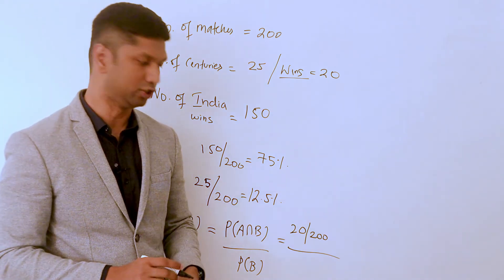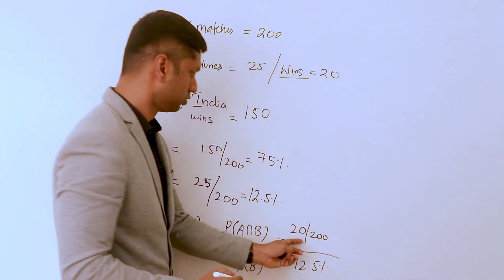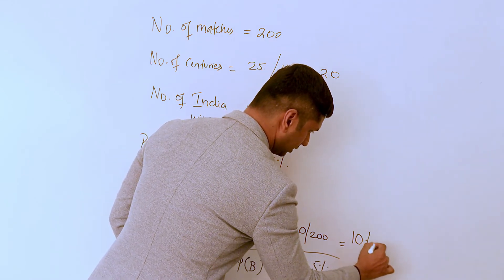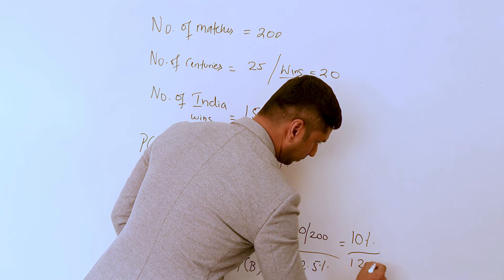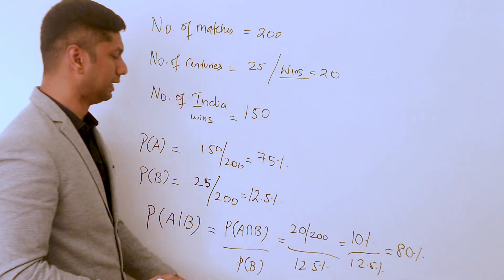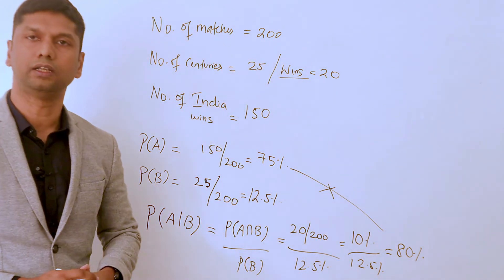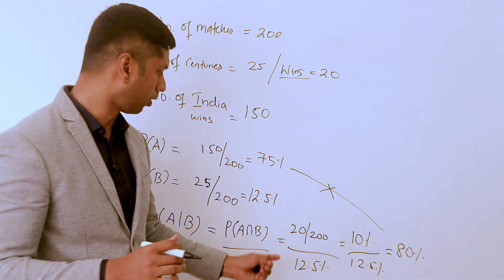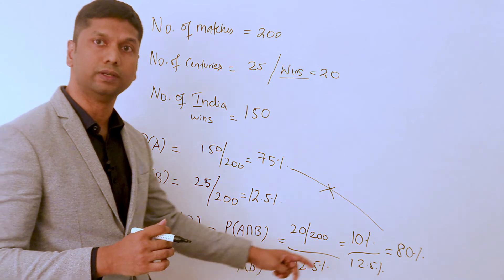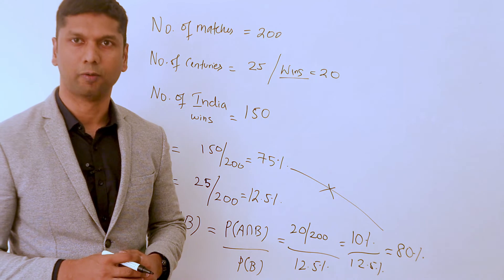That's 10%, and probability of B is 12.5%. So 10% over 12.5% equals 80%. This 80% is not the same as probability of India winning, because probability of India winning when Rohit Sharma scores a century is higher. This is how we calculate conditional probabilities.